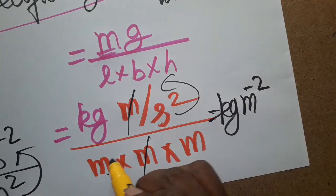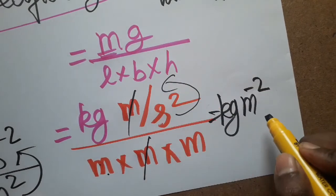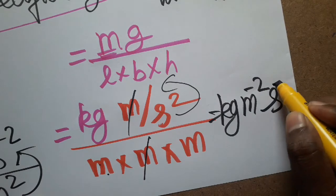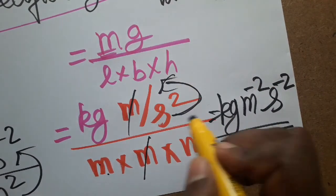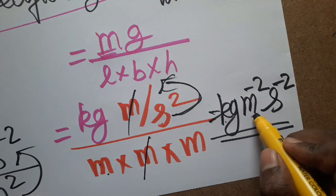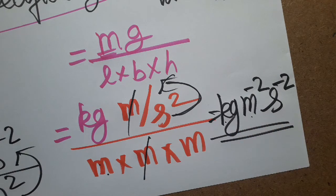Meter minus 2, because meter square when taken as numerator gives minus 2, already second minus 2. So totally, specific weight SI unit will be kg meter minus 2 second minus 2. Thank you.